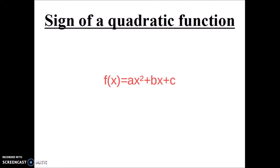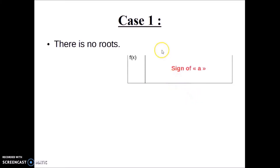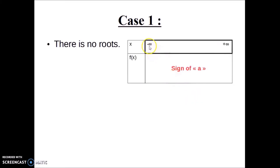So we have three cases. Case 1: there are no roots. The sign table looks like this — from negative infinity to infinity, the function has the same sign as the sign of a.